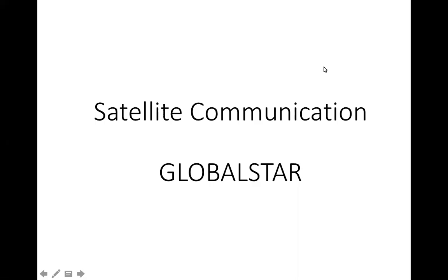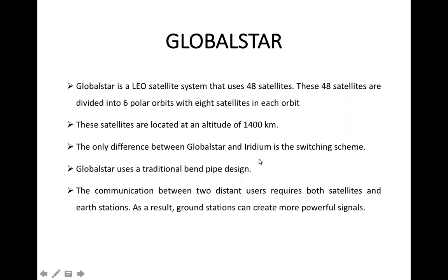Welcome to yet another add-on session on computer networks. In this session we will discuss GlobalSTAR, a satellite communication system. GlobalSTAR is a low earth orbit satellite system that uses 48 satellites in 6 polar orbits with 8 satellites in each orbit. The altitude of the satellites in GlobalSTAR is 1400 kilometers.